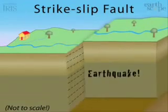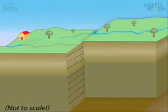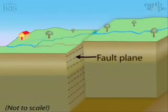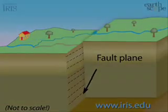Most faults are normal along spreading zones, thrust along subduction zones, and strike-slip along faults.